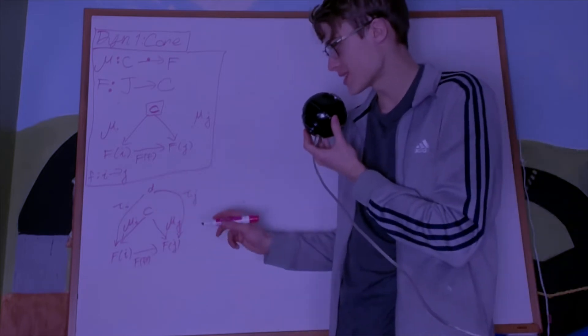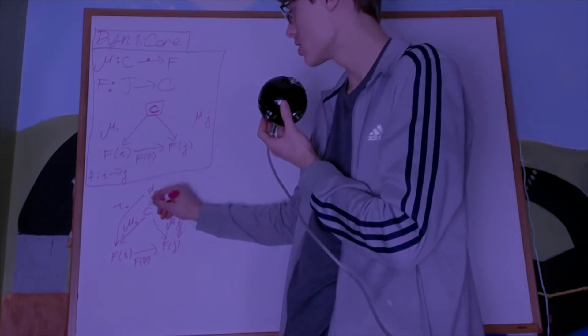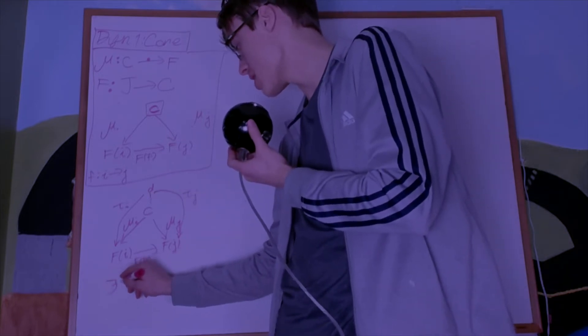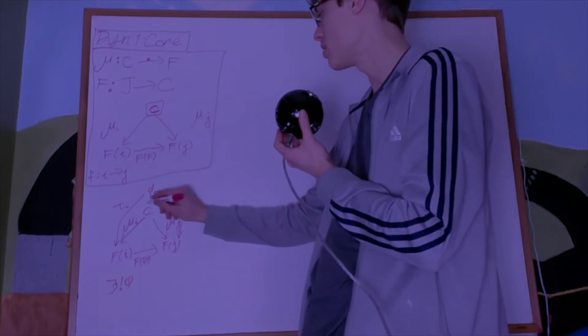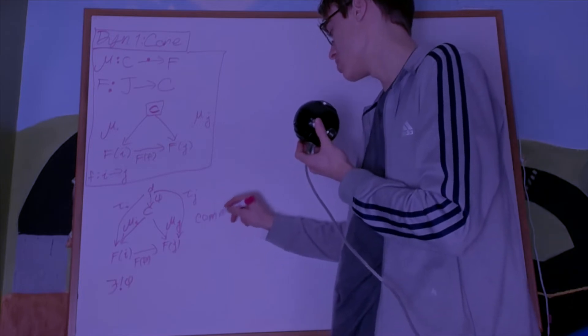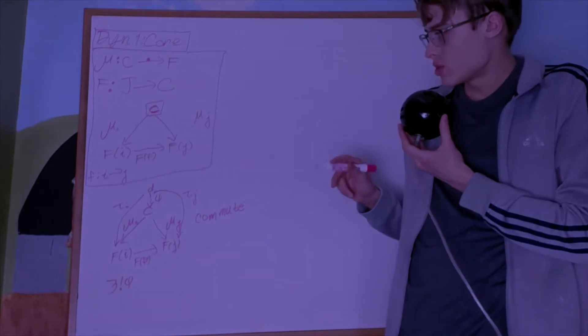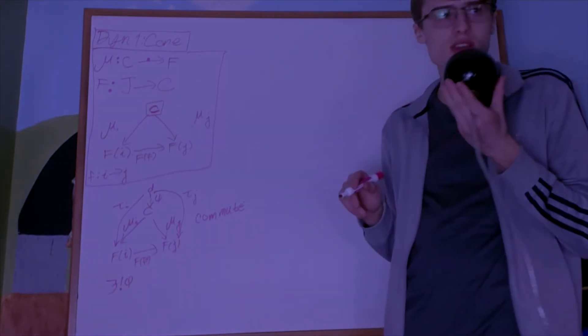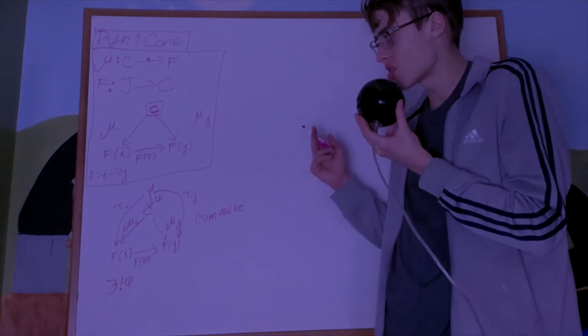What I can do is construct a unique morphism v from D to C that makes this commute. So it just makes the cone transferable to the other cone. So it's like a unique cone. You can really just view this as the one cone that everything else funnels into.